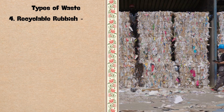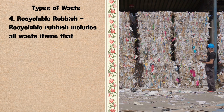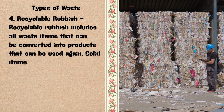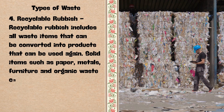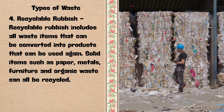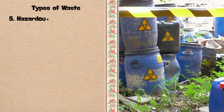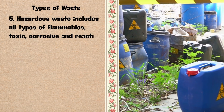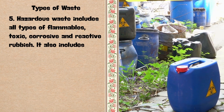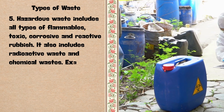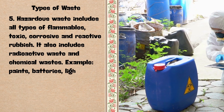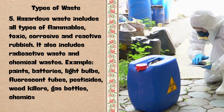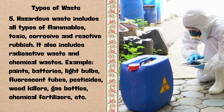4. Recyclable rubbish — it includes all waste items that can be converted into products that can be used again. Solid items such as paper, metals, furniture, and organic waste can all be recycled. 5. Hazardous waste — it includes all types of flammables, toxic, corrosive, and reactive rubbish. It also includes radioactive waste and chemical wastes. Examples include paints, batteries, light bulbs, fluorescent tubes, pesticides, weed killers, gas bottles, and chemical fertilizers.